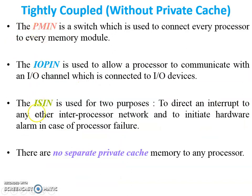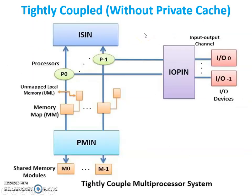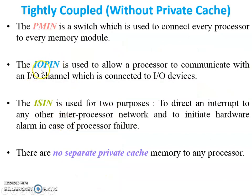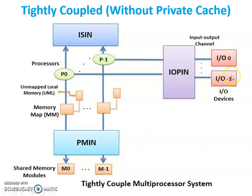The PMIN is a switch used to connect every processor to every memory module. In the figure, P0 is connected to M0 and all memory blocks using PMIN; similarly, Pn-1 is also connected through PMIN to all memory modules. The IOPIN is used to allow a processor to communicate with the I/O channel which is connected to I/O devices. For example, a keyboard, mouse, printer, or any device that wants to interact with the processor is connected through the IOPIN network.